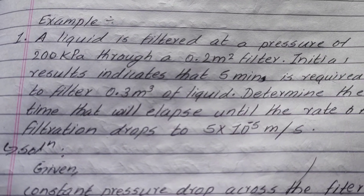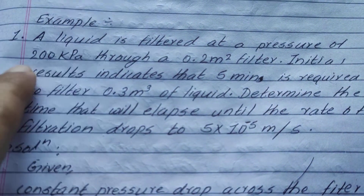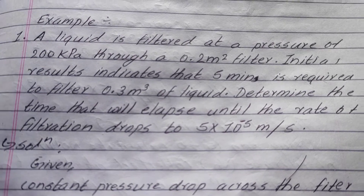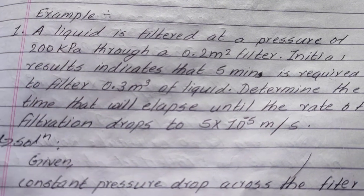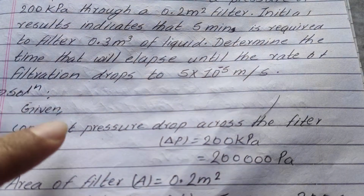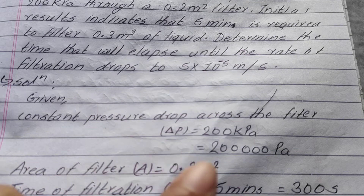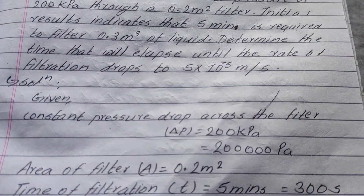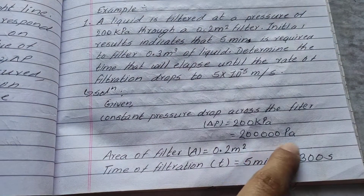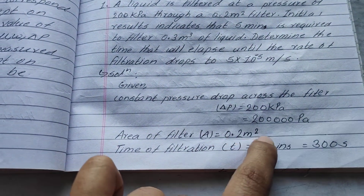Under constant pressure, I am going to convert the pressure: ΔP equals 200 kPa. The cross-section area of the filter is 0.2 m².